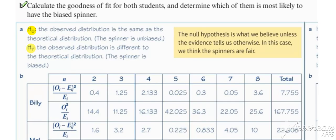So to calculate the goodness of fit for both students, we calculate, first of all for Billy, observed minus expected squared all over expected. And same thing for Mel, and then we add them all together.